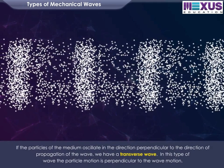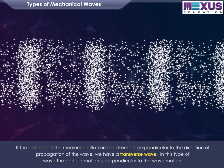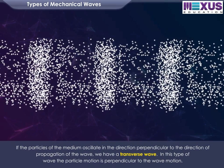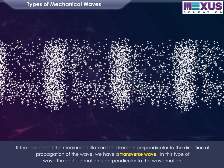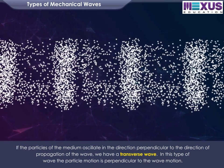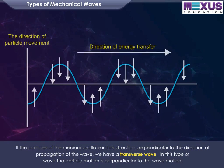If the particles of the medium oscillate in the direction perpendicular to the direction of propagation of the wave, we have a transverse wave. In this type of wave, the particle motion is perpendicular to the wave motion.